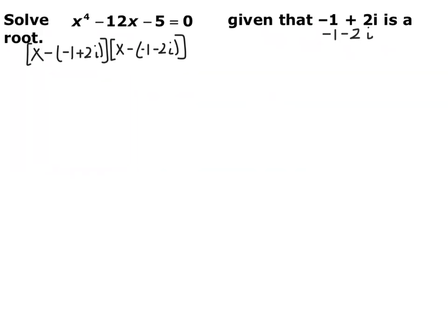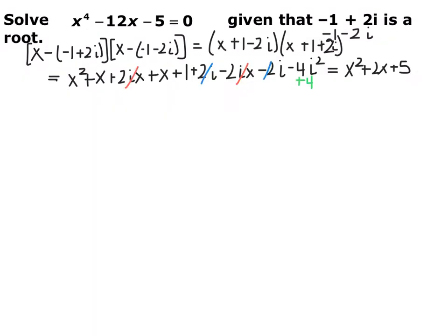We know these two complex roots are factors, just like in the previous example. We'll find the quadratic made from these two and then divide it into our original function to find the other two roots. Pause the video and foil to find that quadratic. When you foil, you get x squared plus 2x plus 5. On this one you get a negative 2i times positive 2i, which gives negative 4i squared — and since i squared is negative 1, you end up with a plus 4.